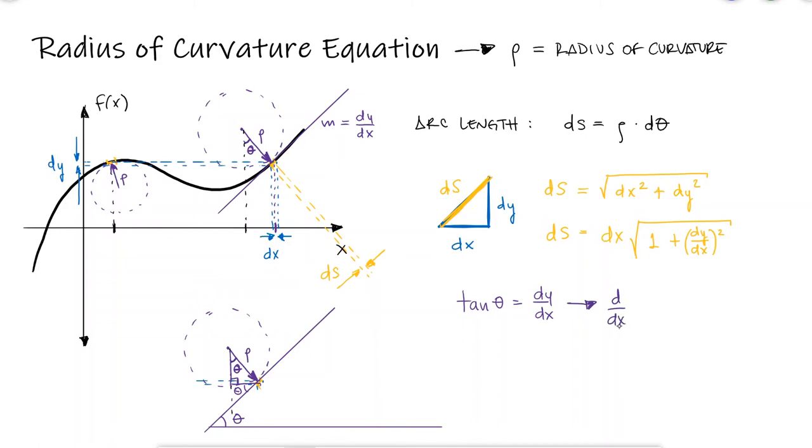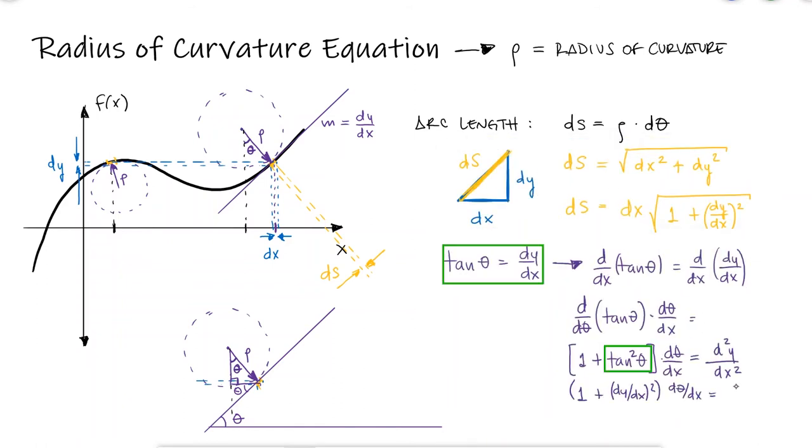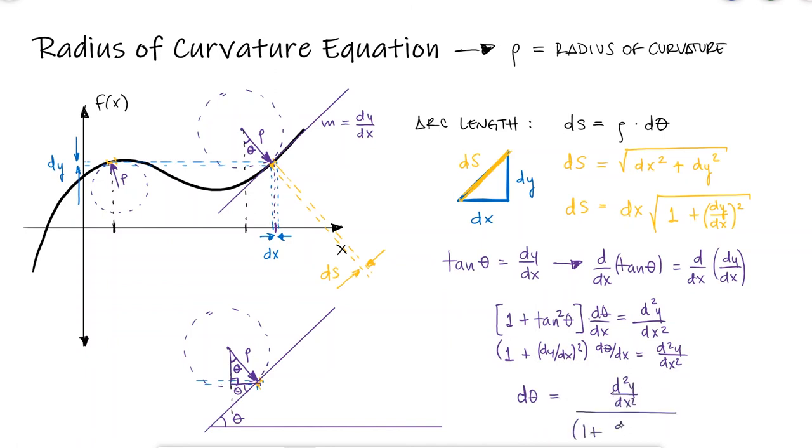If we take the derivative of this expression with respect to x, on the left side we'd see the derivative of tangent of theta with respect to theta, which is 1 plus tangent squared times the derivative of theta with respect to x. On the right hand side, we'd just see the second derivative of y with respect to x. The tangent squared on the left hand side can be substituted by (dy/dx) squared and we can now solve for d theta.